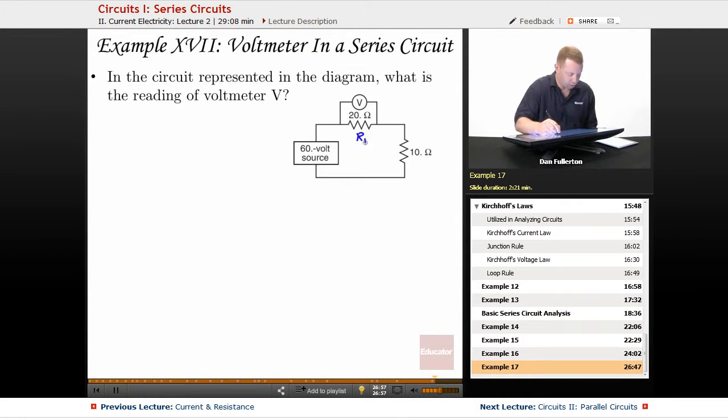Let's call this R1 and this R2 and make our VIRP table: V, I, R, P. We have resistor 1, resistor 2, and total.